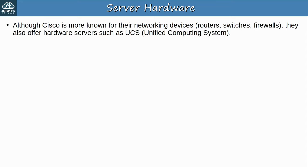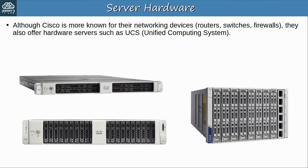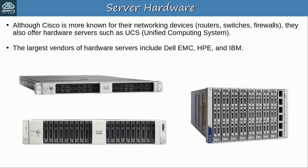The first topic for today is virtual servers, but first let's look at some server hardware. Although Cisco is more known for their networking devices such as routers, switches, and firewalls, they also offer hardware servers such as their UCS, Unified Computing System. Here are some examples of Cisco UCS servers. Although Cisco offers these hardware servers, the largest vendors of hardware servers include Dell EMC, HPE, which is Hewlett-Packard Enterprise, and IBM, but there are many other large vendors too.